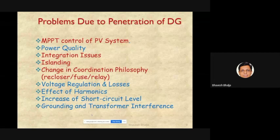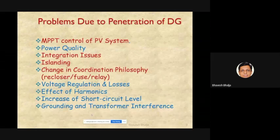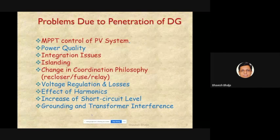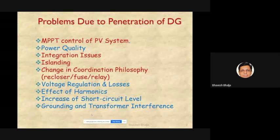When distributed generators (e.g., 10 DGs) are connected, they also inject current into the system. The utility power plus power from all 10 DGs are vectorially added, increasing the short-circuit level of the network. This means circuit breakers and isolators originally designed for the lower short-circuit level must be replaced, which involves significant cost.